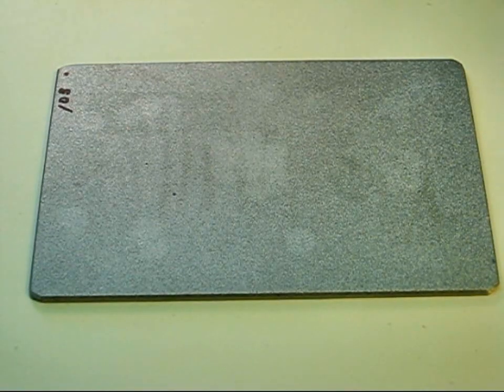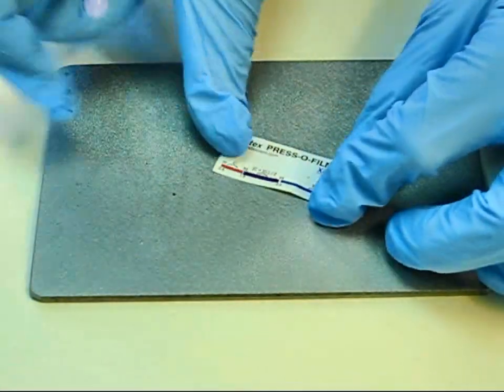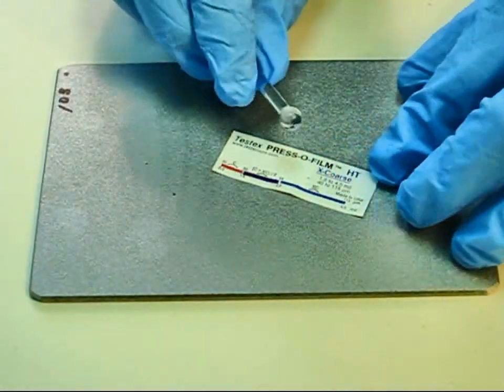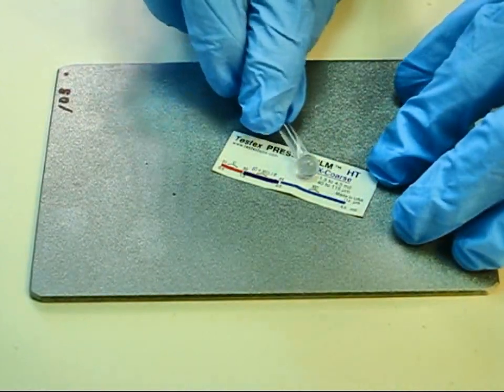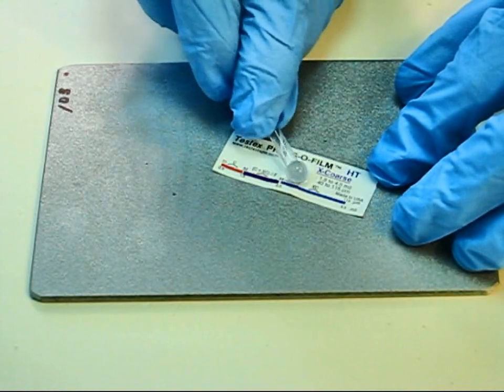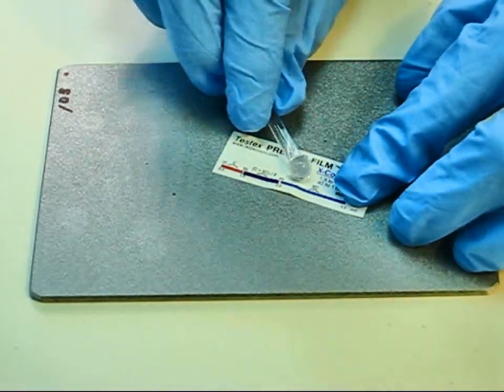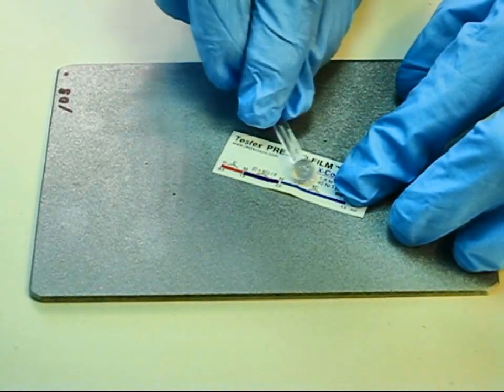Apply the tape to the blasted surface. Press the adhesive-backed paper to hold it securely in place. Firmly compress the replica tape with the smoothest surface on the rounded end rubbing tool provided, applying sufficient pressure to produce a replica with a uniform pebble grain appearance.